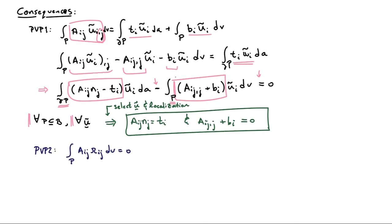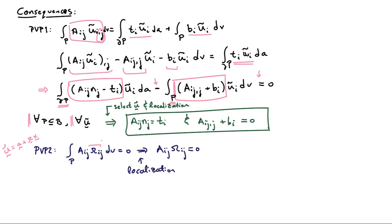Now let's look at the second part of the principle of virtual power. It says the double contraction of A with the gradient of the virtual velocity field equals zero whenever that field is rigid. The gradient of the rigid virtual velocity field is just omega. By the localization theorem applied to all parts P, the double contraction of A with omega equals zero. Since this must hold for all skew omega, that tells us AIJ equals AJI — so A is indeed symmetric.